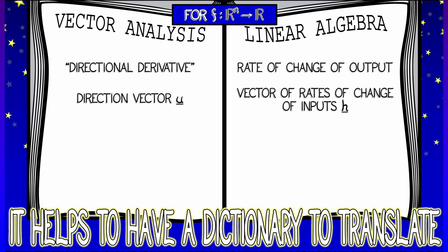In vector analysis, you've got to have a unit vector u defining a direction, whereas we can use any vector h of rates of change of the inputs of this function.